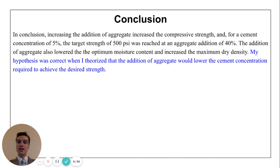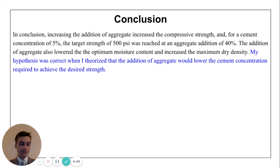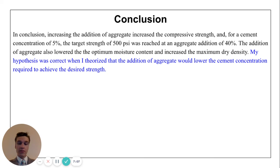In conclusion, increasing the addition of aggregate increased the compressive strength, and for a cement concentration of 5%, the target strength of 500 psi was reached and exceeded at an aggregate addition of 40%. The addition of aggregate also lowered the optimal moisture content and increased the maximum density. This project was sponsored by my internship and the results are being used at a construction site. This data has been able to save clients considerable money because we are able to use less cement, which is very costly, and instead use aggregate, which is much cheaper.